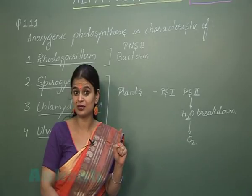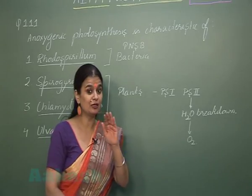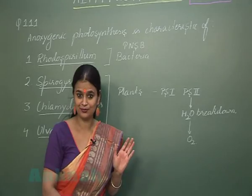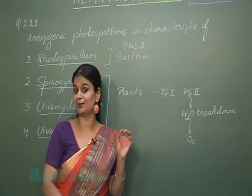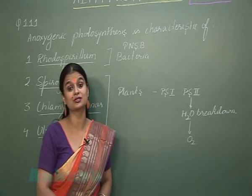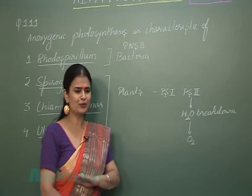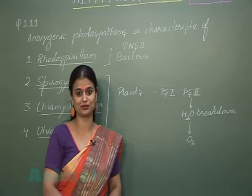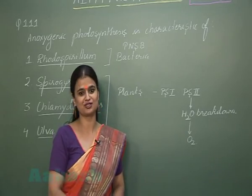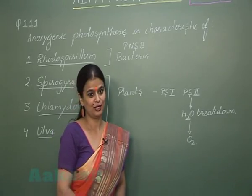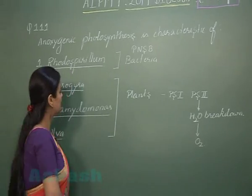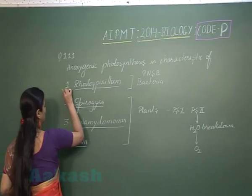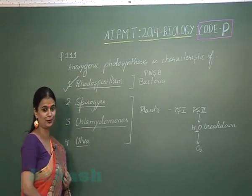In bacteria, there is only one photosystem, so the breakdown of water is absent and oxygen release during photosynthesis is absent. When oxygen release is absent, this type of photosynthesis is called anoxygenic photosynthesis. So the right answer for this question is option number 1.